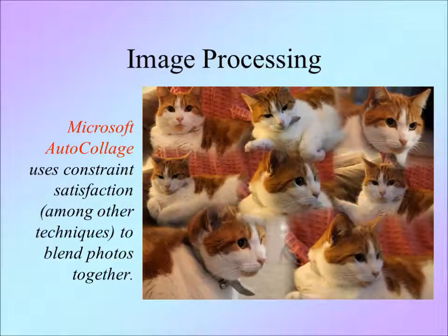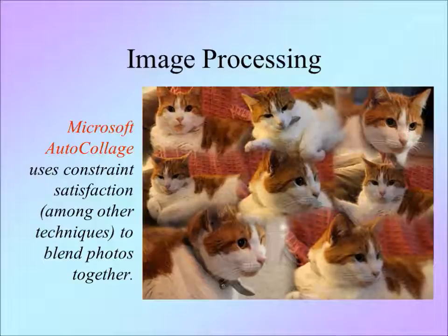Microsoft also uses constraint technology. For example, their product AutoCollage has to select a subset of photos supplied by the user to form a collage. It has to decide which photographs to select, where to place them, and how to blend them together. Decisions go all the way down to pixel level — which pixel should be on and off. To create a beautiful collage, many constraints must be observed.